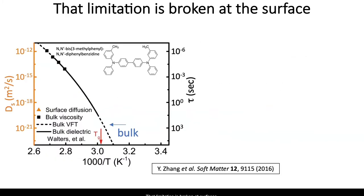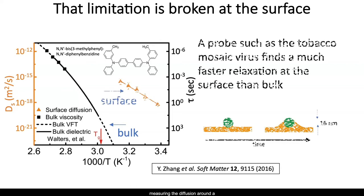That limitation is broken at surfaces. This graph shows the bulk relaxation measured from a molecular glass, diphenyl benzidine. You can see the relaxation time increasing very rapidly below Tg. But at the surface, which we can probe by measuring the diffusion around a 16 nanometer particle, one finds relaxation times many orders of magnitude faster and increasing much more slowly.